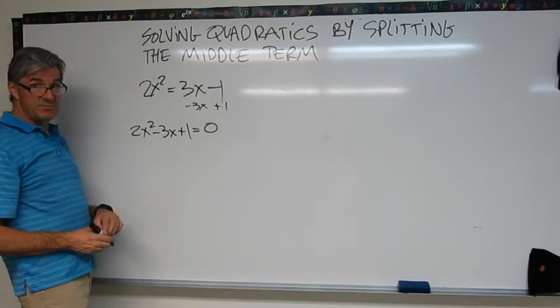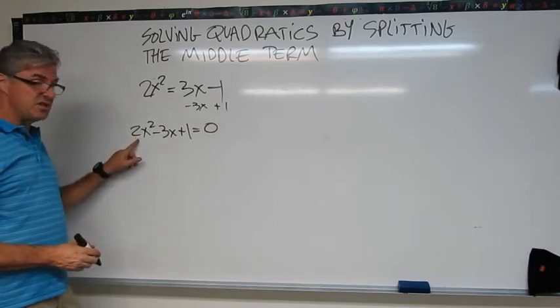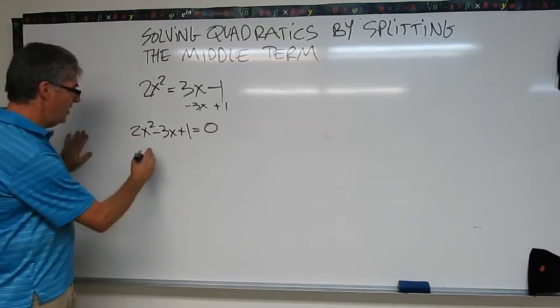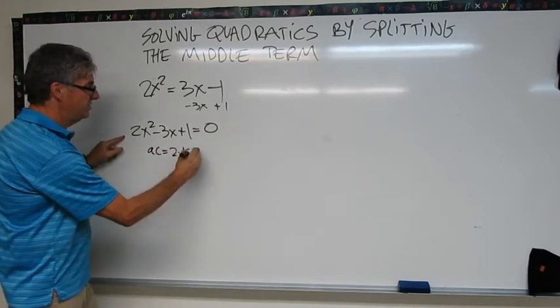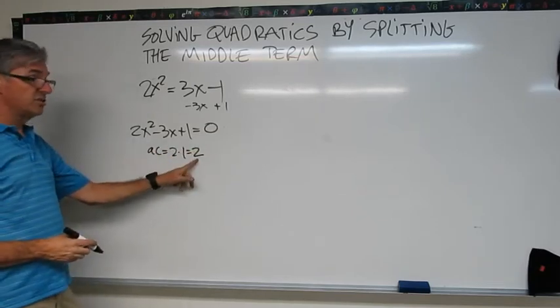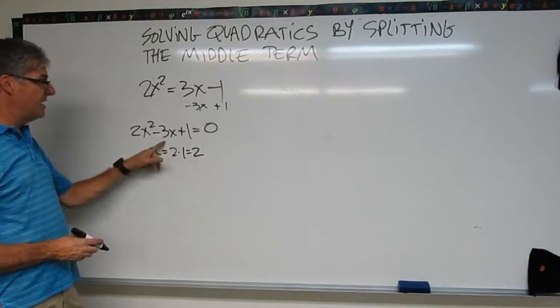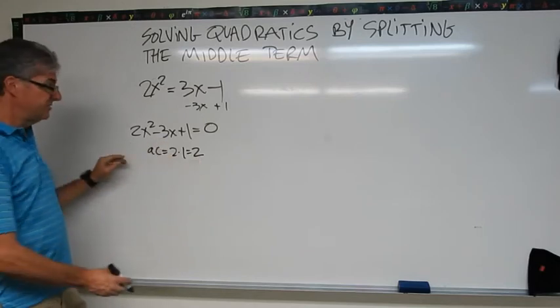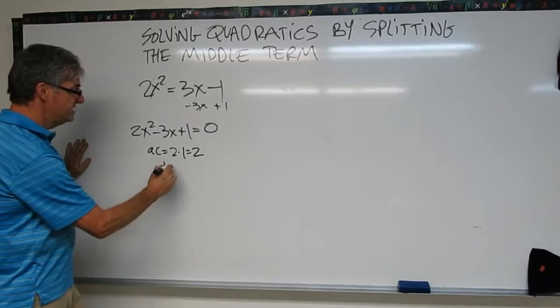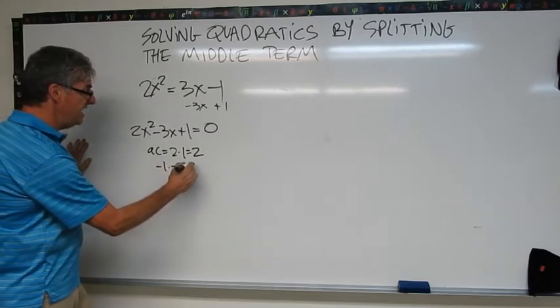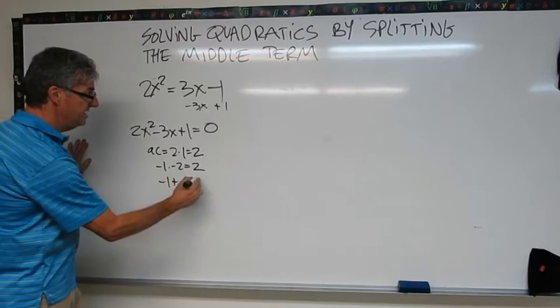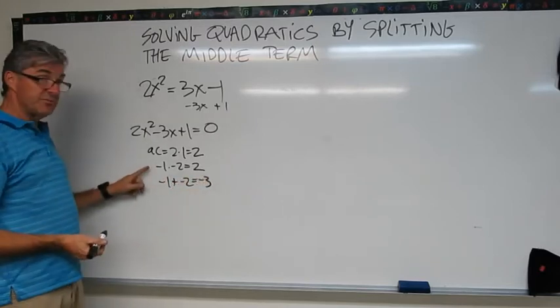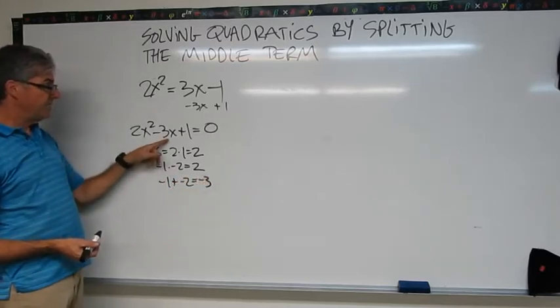So now I'm going to try splitting the middle term because I do have a number in front of my x². So AC equals 2 times 1, which is 2. So I need two factors of positive 2 that add up to negative 3. So that's going to be negative 1 times negative 2 because that equals positive 2. Negative 1 plus negative 2 equals negative 3. So those are my two factors for splitting my middle term.